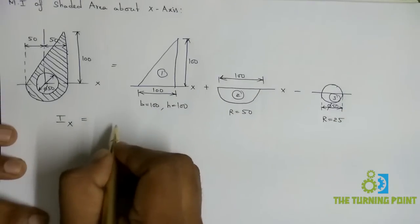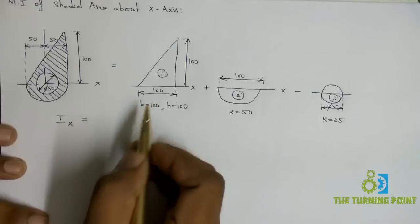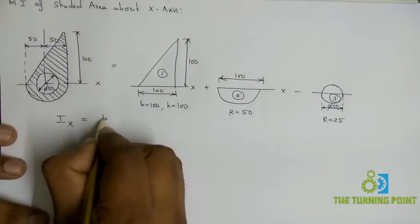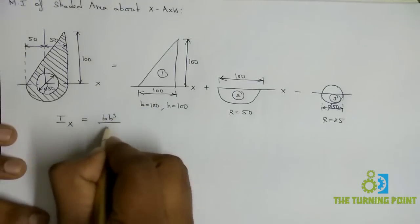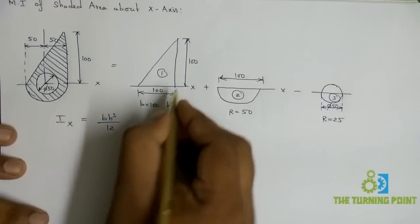If you know the relations then it is quite easy. For the right-angle triangle with base b and height h, the moment of inertia about the x-axis is bh³/12. This is for right-angle triangle.